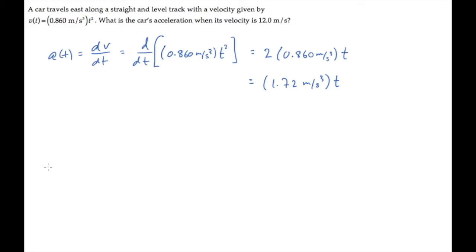If we knew the time when the car had the velocity of 12 meters per second, we could substitute that time in. That's what we need to find next. We'll find that by setting the velocity equation equal to 12 meters per second.